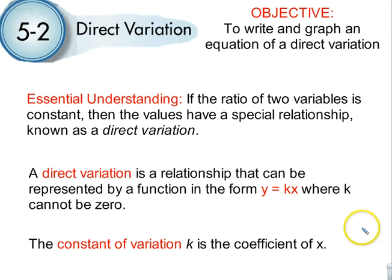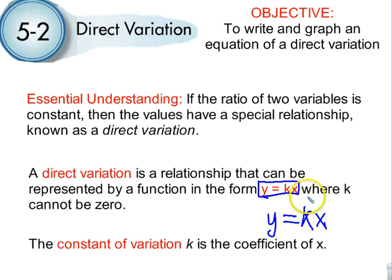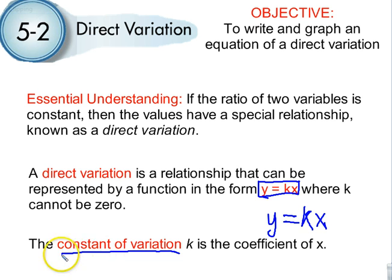Section 2 is about direct variation. Direct variation is a relationship that can be represented by a function in this form: Y equals K times X, where K is not allowed to be zero. K is called the constant of variation. In math, we use K for constant instead of C.